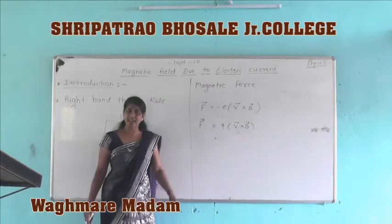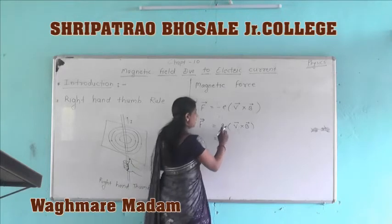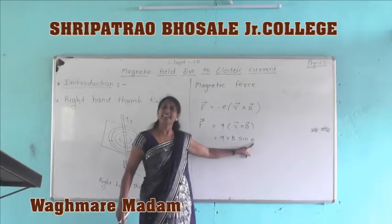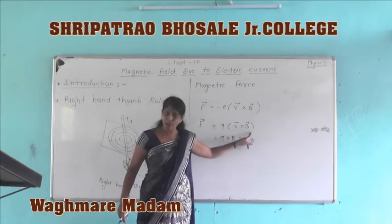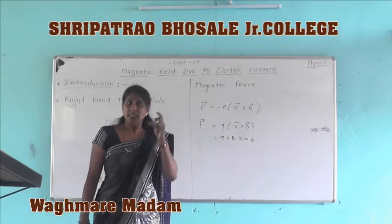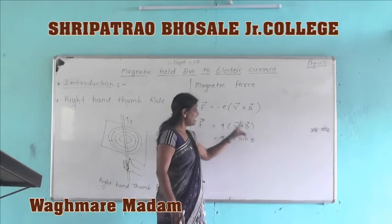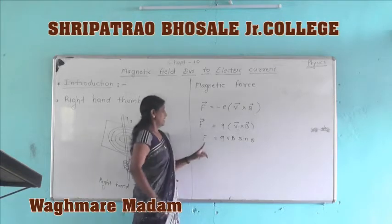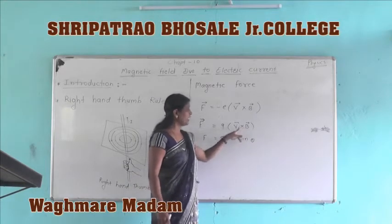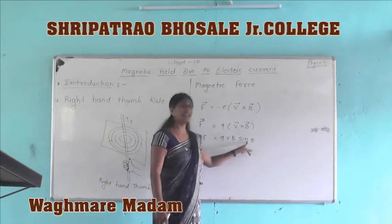Here theta is the angle between velocity and magnetic field. That is, a charge is moving in the magnetic field and the angle between the direction of its velocity and the magnetic field is theta. Therefore we can write the magnetic force as F = QVB sin theta.